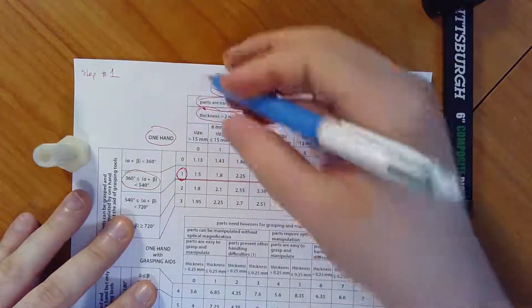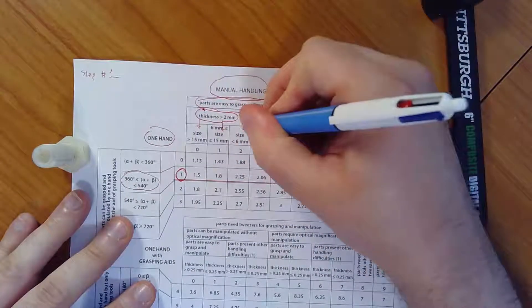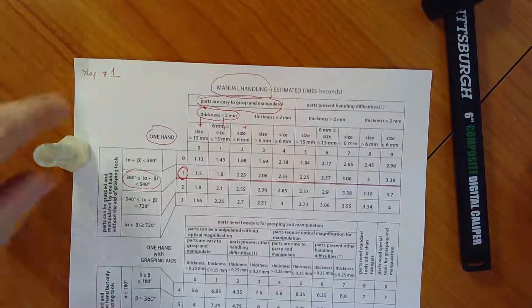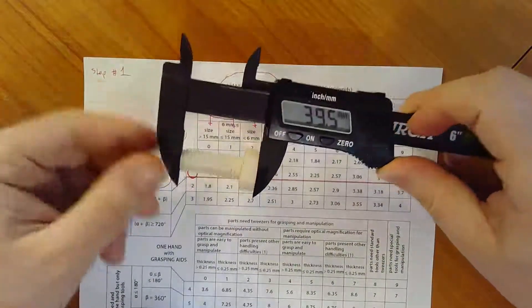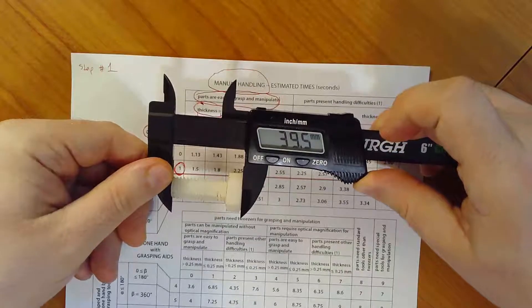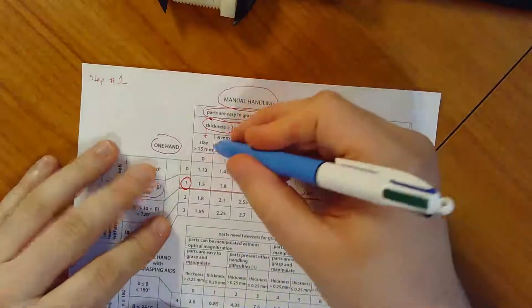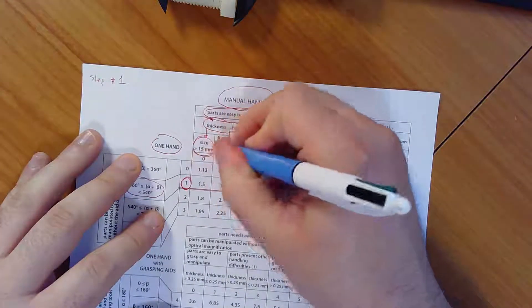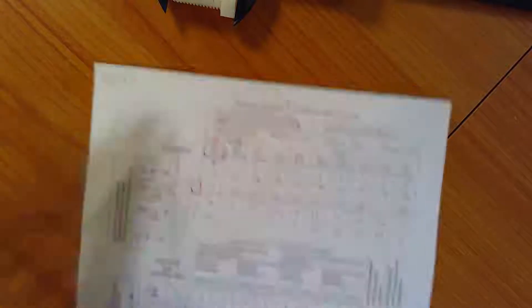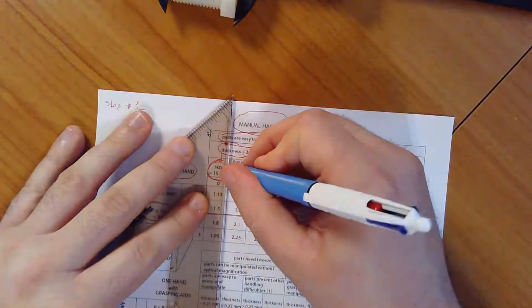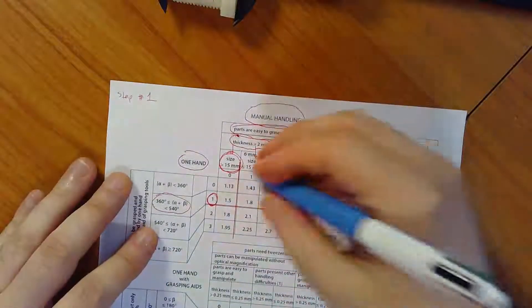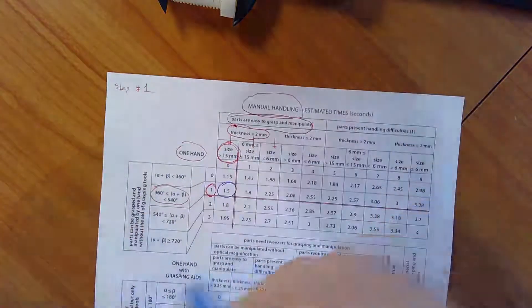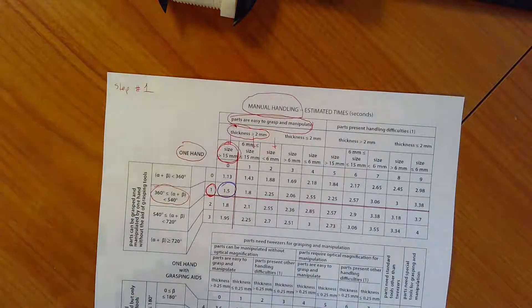And so now that I've got the thickness, I have to measure the size. The size is the longest linear dimension. So let's make sure my calipers are zeroed. They are. And I'm going to go back and measure this longest linear dimension. And it's thirty nine point five millimeters, which means that I have a size that's much larger than 15 millimeters. So I'm going to circle this guy. And if I now take my straight edge, that brings me down that column, which means that ultimately this is my first value. One point five seconds.